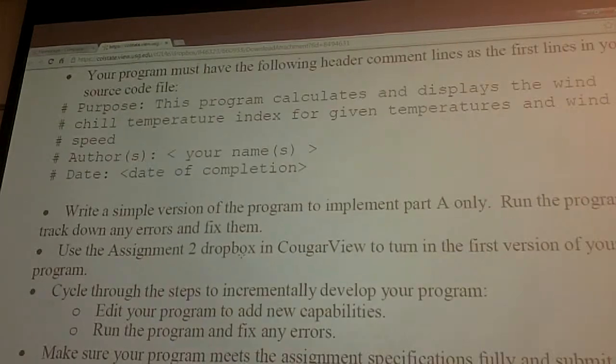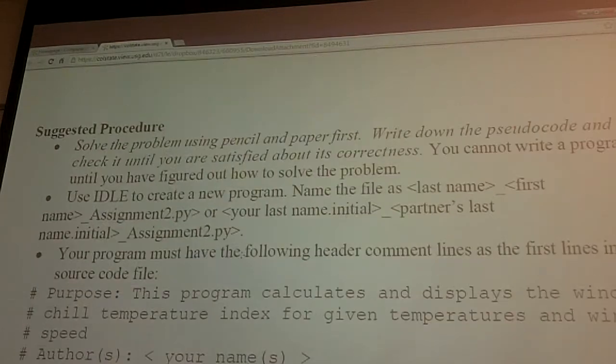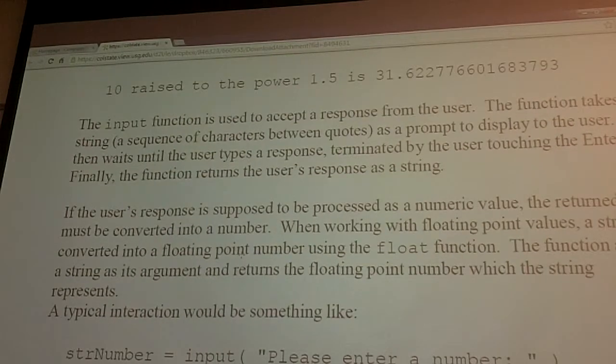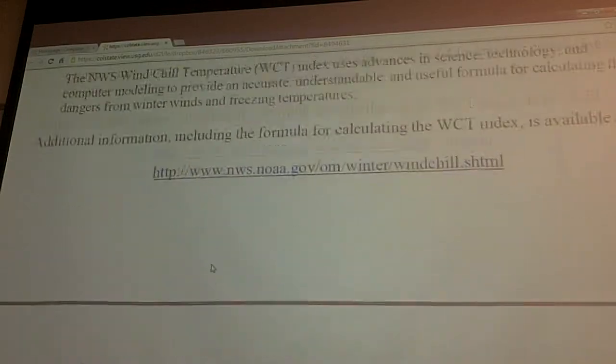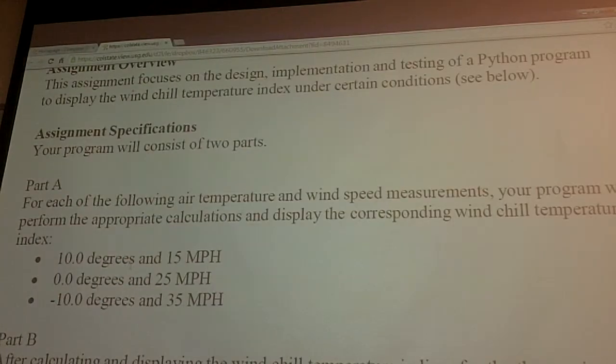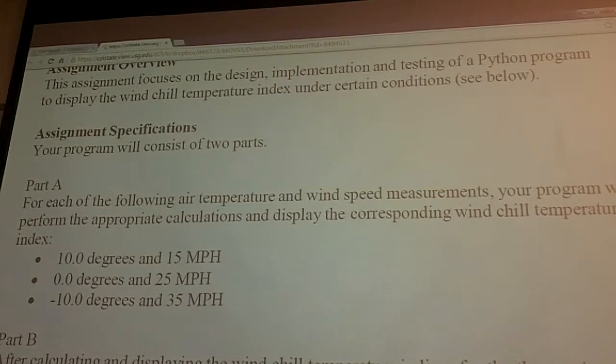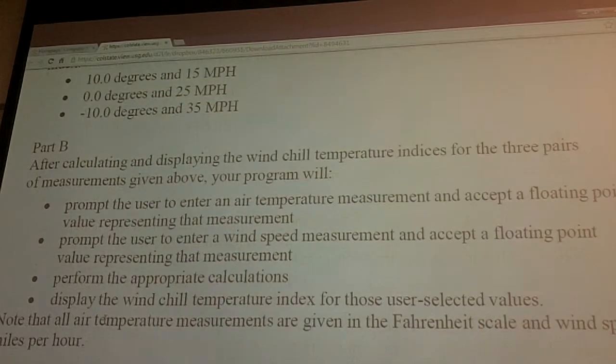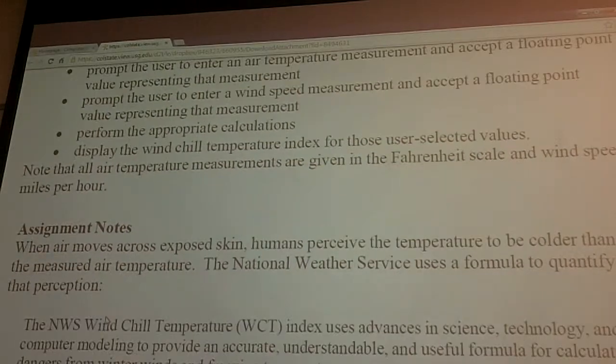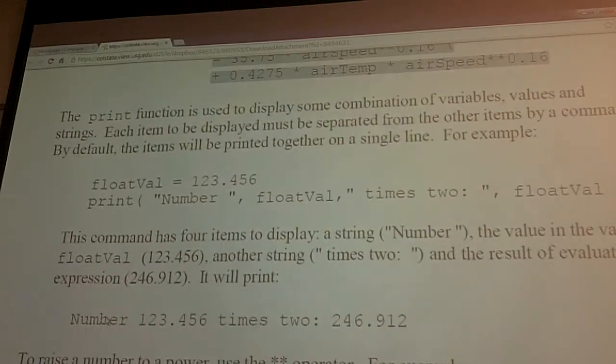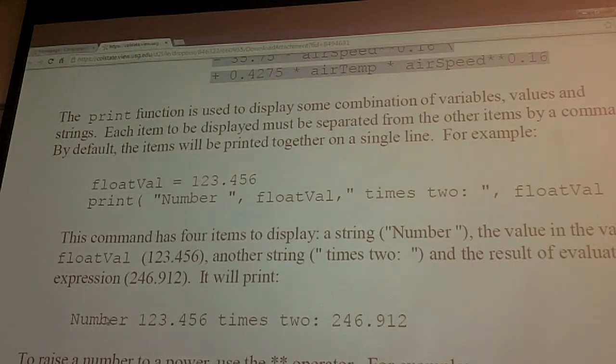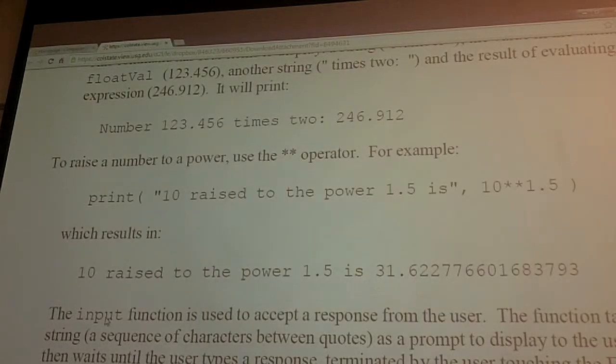So what you should do is, like all programmers do, is try to get a simple working version of your program. Keep it simple, just do Part A. See if it works. See if it works and then add Part B and test it if that works too. You can then submit. But working one part at a time, don't try to do it all. Or you can do Part A, if it works you can submit, and then do Part B and then submit again with both parts A and B. Okay, alright.